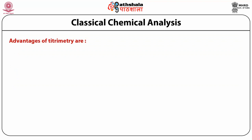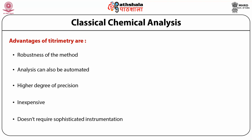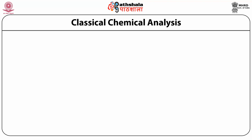Titrometric determination has the following advantages: robustness, analysis can also be automated, a high degree of precision can be achieved, the method is inexpensive, and it does not require sophisticated instrumentation.